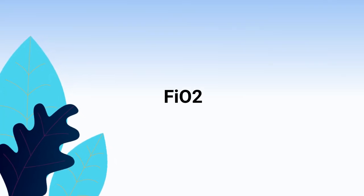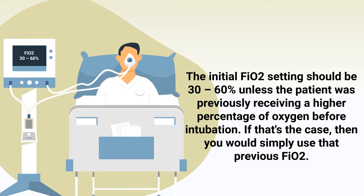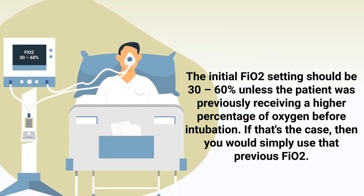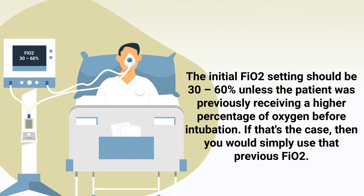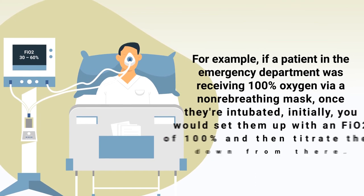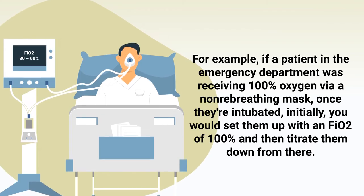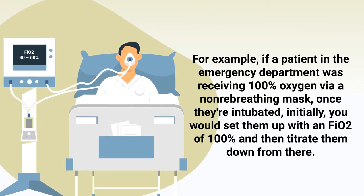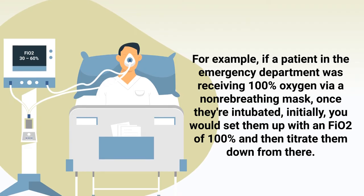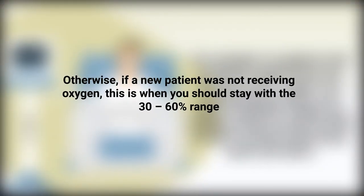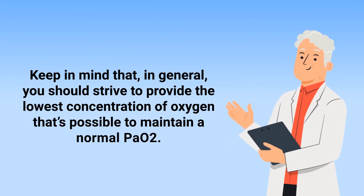Next is the FiO2. The initial FiO2 setting should be 30 to 60 percent, unless the patient was previously receiving a higher percentage of oxygen before intubation. If that's the case, simply use that previous FiO2. For example, if a patient in the emergency department was receiving 100% oxygen via a non-rebreathing mask, once intubated you would set the FiO2 at 100% and then titrate down from there. In general, you should strive to provide the lowest concentration of oxygen possible to maintain a normal PaO2.